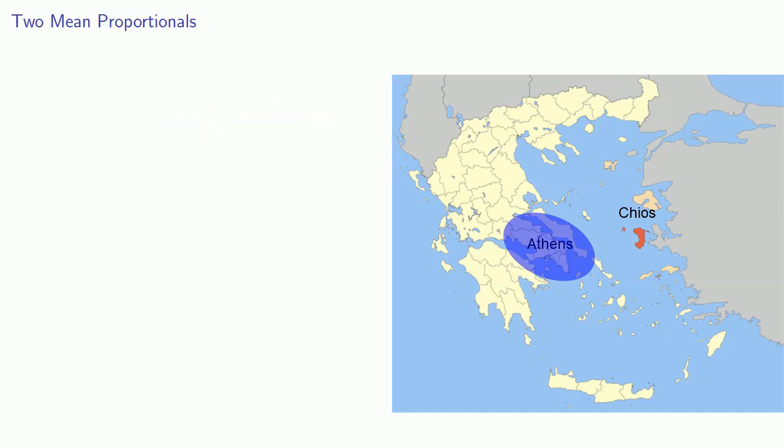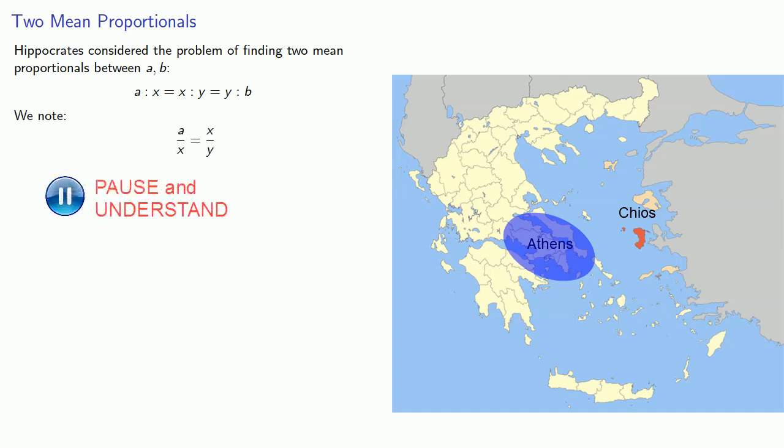Now, Hippocrates considered the problem of finding two mean proportionals between A and B, and his results are most easily understood if we rewrite this in a somewhat modernized format. So this first proportionality, A is to X as X is to Y, we can write that as A over X equals X over Y. And if we multiply both of these by A over X and simplify, A squared is to X squared as A is to Y.